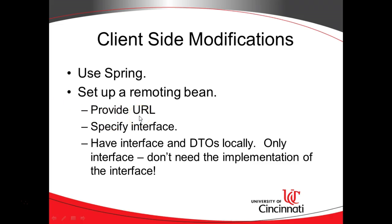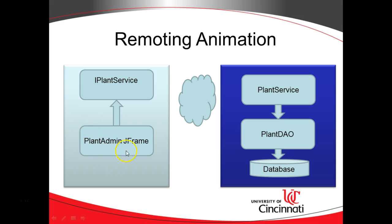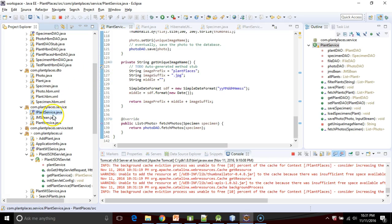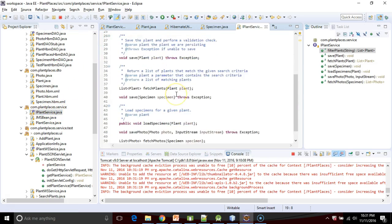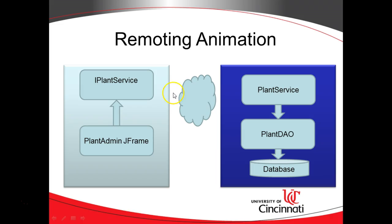This is easiest to show through an animation. On the left side is our client application — our Swing-based application. We have a JFrame that is going to be calling methods on that IPlantService interface. But again, we only see methods, not implementation. What's going to happen is it's going to reach across the network and go to the actual implementation called PlantService, which is essentially a microservice. That's going to reach into our plant data access object, then into our database, and return whatever matching plants match the search criteria all the way back to our JFrame.